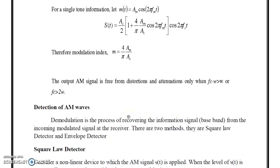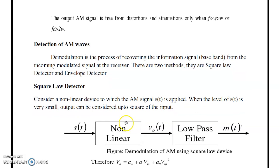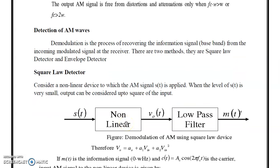Now, the detection of AM signals. We have generated the AM signal; now we have to demodulate it. By demodulation, we will recover the message signal m(t), also known as the baseband signal or information signal. We have to recover it from the carrier signal. Mainly two methods will be used: the square law detector and the envelope detector.